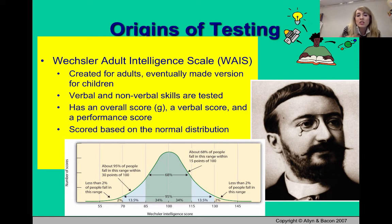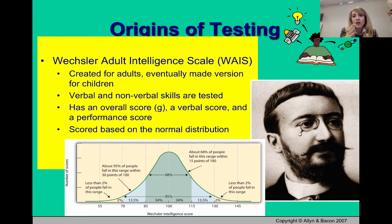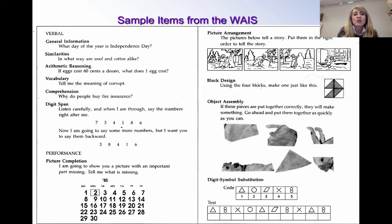Because the Stanford-Binet was designed for children, an adult test was needed. The most frequently used test today is the Wechsler Adult Intelligence Scale (WAIS), which tests both verbal and non-verbal abilities — something the Stanford-Binet did not do. It produces an overall score called G (general intelligence), a verbal score, and a performance (non-verbal) score. Importantly, it replaced the original MA/CA formula with a normal distribution, standardizing scores based on where individuals fall within the bell curve.